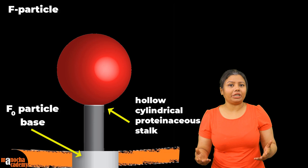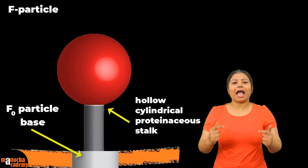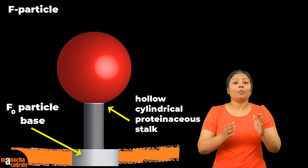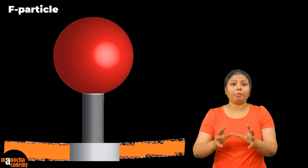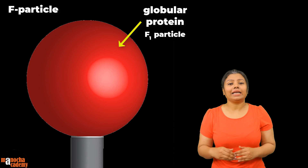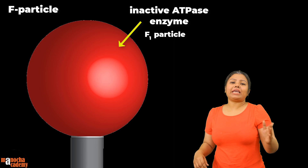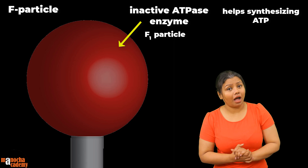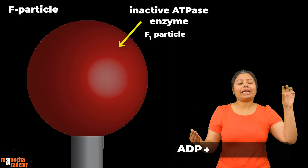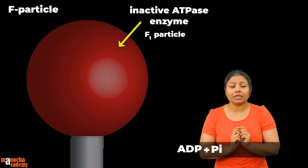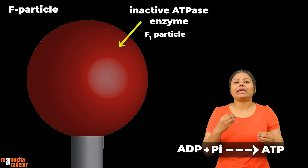You have learned about transmembrane proteins and aqueous passages made for charged ions. This hollow channel actually makes a passage for the charged hydrogen ions when they try to go from the perimitochondrial space into the matrix. The globular head of the F particle, the F1 particle, is actually an inactive ATPase enzyme. An ATPase enzyme helps in synthesizing ATP by joining one inorganic phosphate to adenosine diphosphate — joining ADP to one inorganic phosphate gives you ATP or adenosine triphosphate, a reaction catalyzed by the ATPase enzyme.